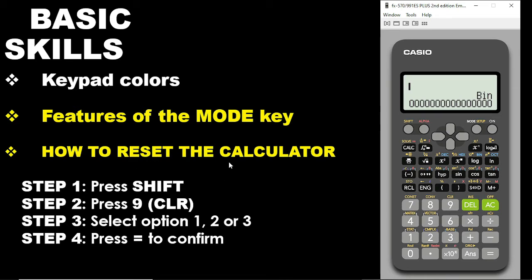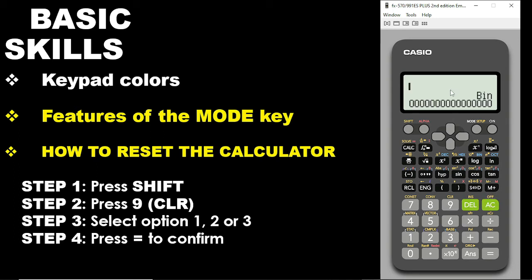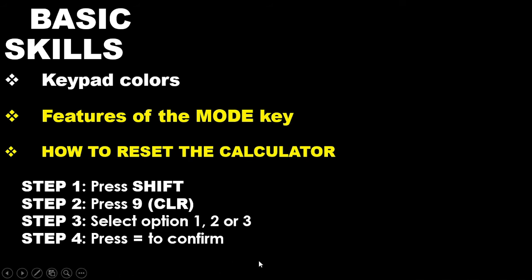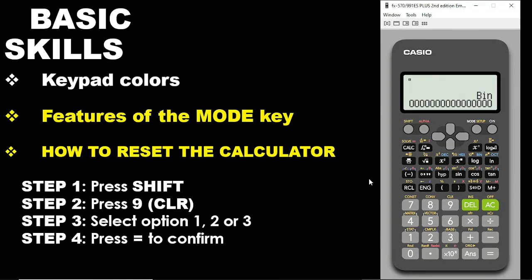So how do we reset our calculator if you have used it in a particular function and it is now giving you error? For example, 6 plus 2 — we all know it is 8 — but you press this and you are getting an error because you have set your calculator in a particular function. To clear or reset your calculator, we follow these 4 simple steps. First, you press Shift. Second, you press the number 9 — you see CLR written in yellow on top of 9, that is why we press Shift first.